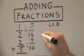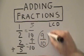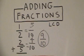Now, all we do is add our numerators together to get nine tenths, which is our final answer since it cannot be reduced any further.